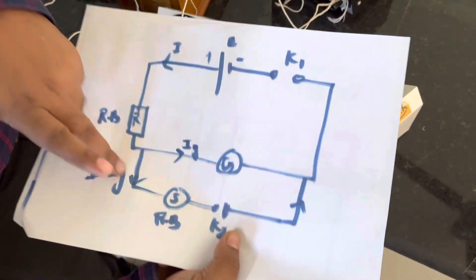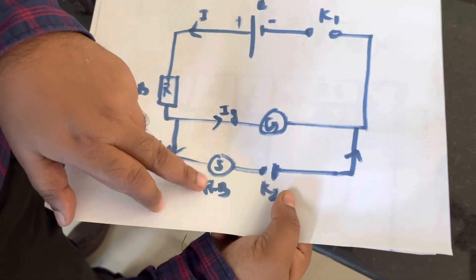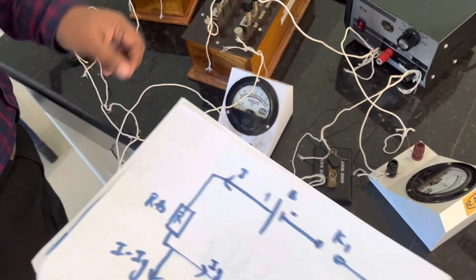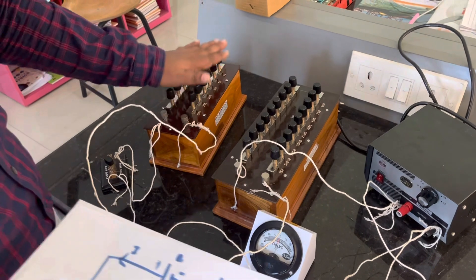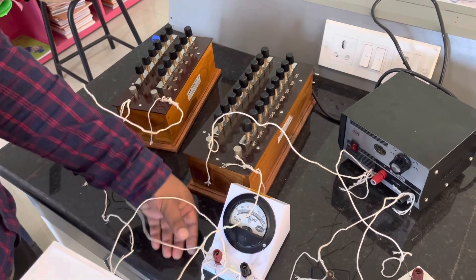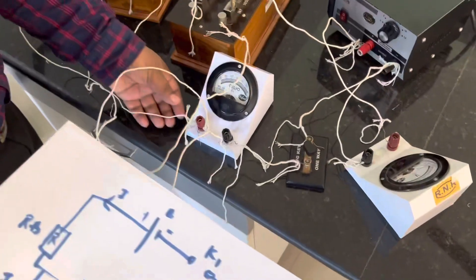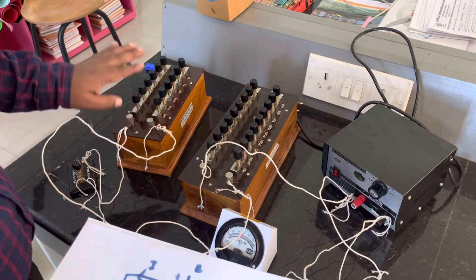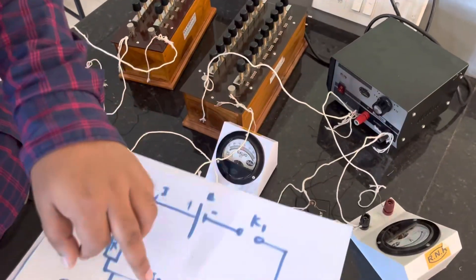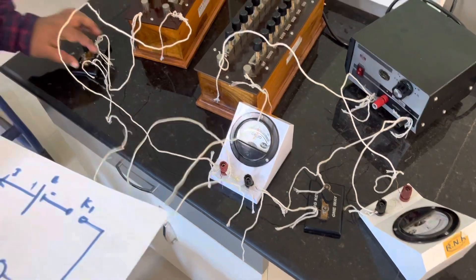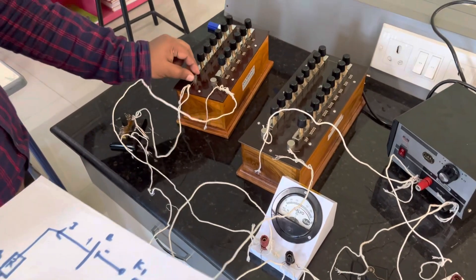Now for the parallel connection: the shunt resistance, which is another resistance box, is connected in parallel to the galvanometer. One end of this resistance box is connected to the galvanometer's red terminal, and the other end is connected through a key to the shunt. So now our circuit diagram is complete.